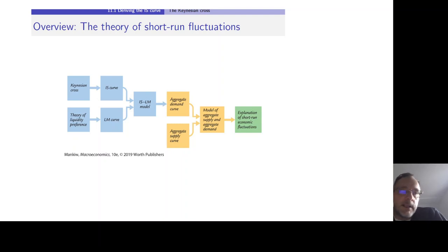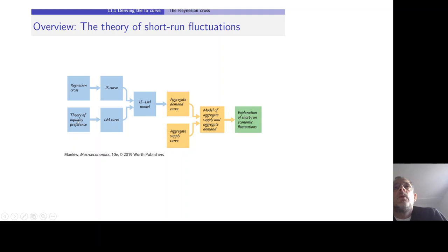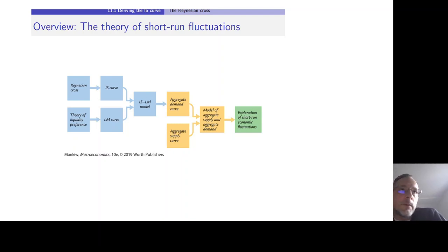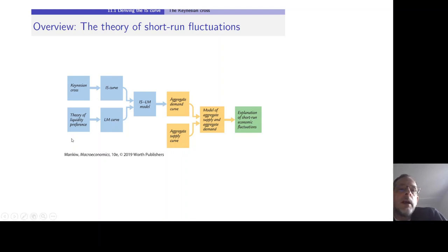Based on this Keynesian cross model, we derived the IS curve, which is displayed in an interest rate-income diagram and has a negative slope. In the second part of chapter 11, we looked at the theory of liquidity preference. We said the money market is in equilibrium when money demand equals money supply, and from that we can determine the endogenous variable which is the interest rate. We then used that model to derive the LM curve and displayed the IS and LM curves together in one diagram.